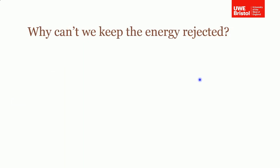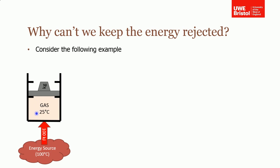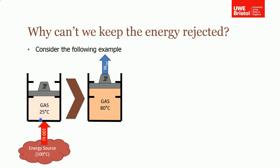On the previous slide I showed that we use a condenser to take the heat out of the steam to condense it back into water. So why can't we keep the energy that's being rejected? It seems an awful waste to reject heat each time — and this forms one of the statements of the second law of thermodynamics. Consider this example: in a piston we have a gas at low temperature, an energy source at a much higher temperature, and we supply the gas with some heat. On top of the gas is a piston with a mass resting on it.